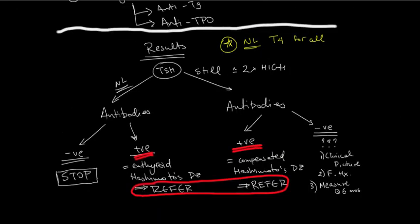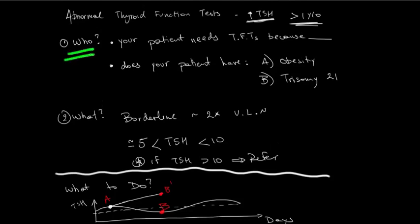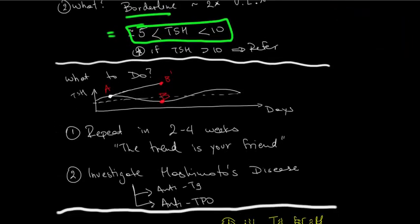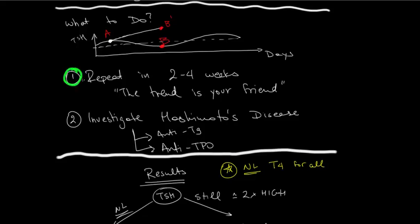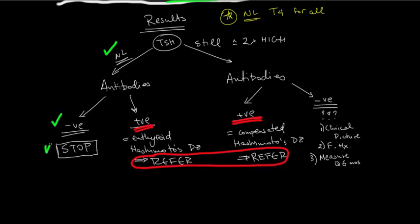Let's quickly summarize. When doing TFTs in a patient, we have to think about who we're testing — you need a good reason. Obesity and trisomy 21 are two instances where TSH can be slightly high — sometimes 5, 6, or 7. Borderline TSH is defined as the upper limit of normal of 5, all the way to twice that, which is about 10. The first thing to do is repeat thyroid function tests in about 2 to 4 weeks, and the trend will tell you which way you're going. Along with the repeat blood test, get antithyroglobulin and antithyroperoxidase antibodies. If you have normal TSH and a negative antibody screen, you can stop your investigations. If your antibodies are positive, these patients have to be referred to the endocrine clinic.